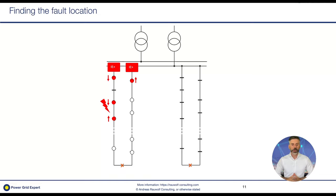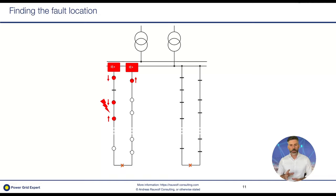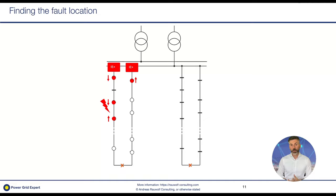Even with one indicator in the middle of a feeder, you can already narrow down the fault location, making the search much quicker. The more indicators you have, the better — once the full feeder is equipped, no switchover is needed at all. This is a big advantage because during an earth fault there is higher voltage on the healthy phases, increasing the risk that a weak point such as a cable joint or potential transformer fails, causing a double earth fault. Narrowing down the search time and clearing the fault as quickly as possible is therefore a huge advantage.